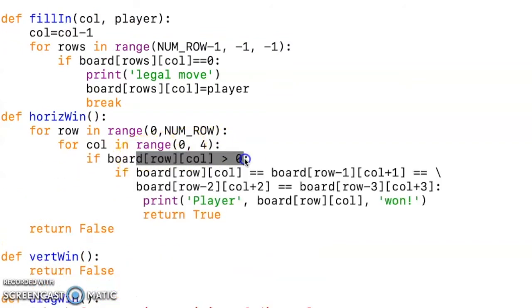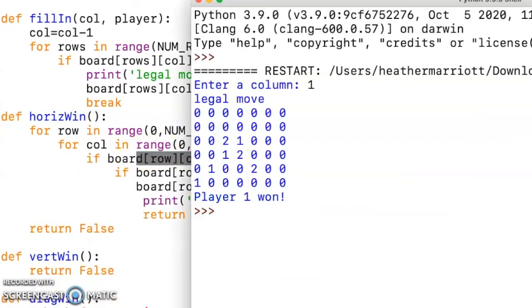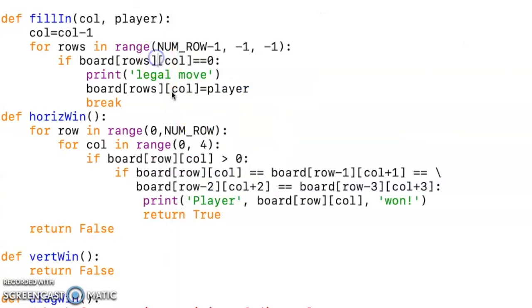So if the position that we're looking at is not a zero and our board looks like this, where the zero means nobody's gone there yet, a one would mean that the first player has gone there, a two is the second player has gone there.